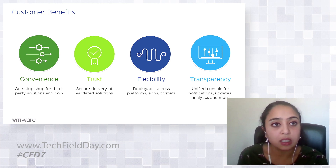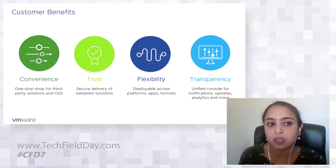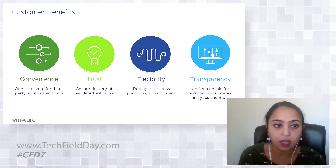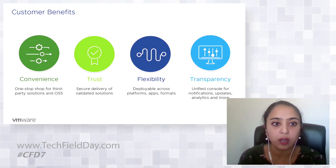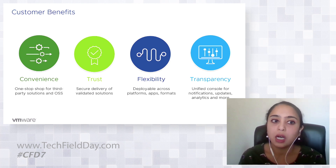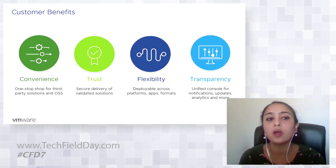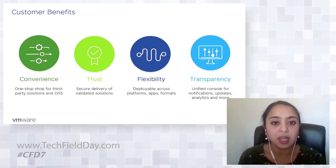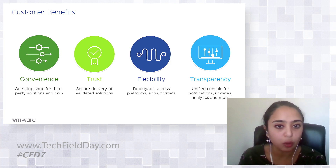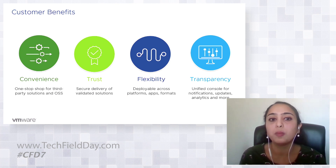Quickly running through the benefits to a customer — there are four big ones: convenience, trust, flexibility, and transparency. Convenience means having all solutions in one central location, making it very easy to find whatever partner solution you're looking for. We keep growing the catalog on a day-by-day basis, so customers have one place to find not just third-party solutions but also open-source solutions. Trust means we've made it a trust-centered marketplace with the validation program and the fact that it's accessible through the secured, controlled access point of the cloud services portal.